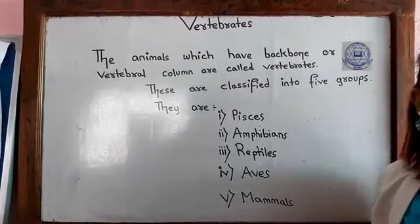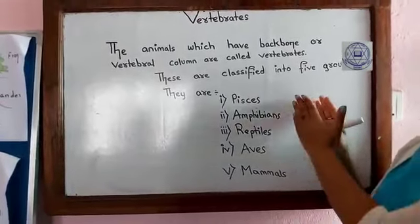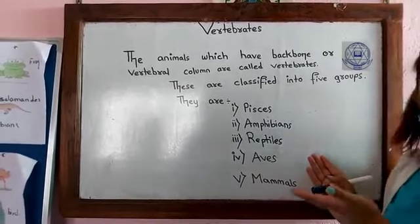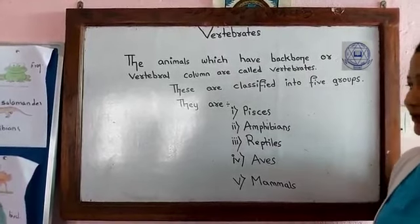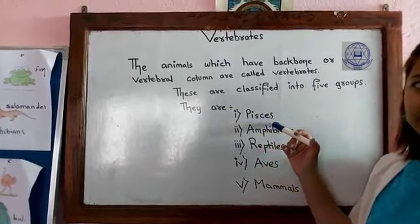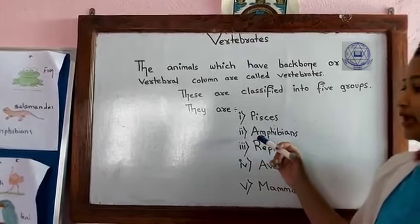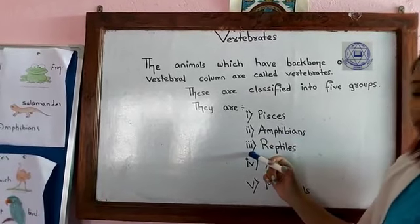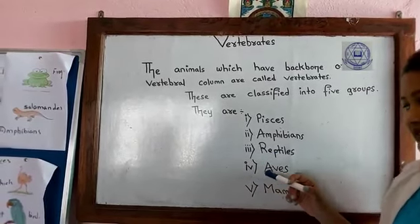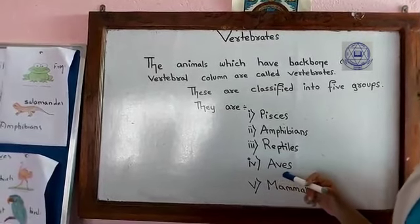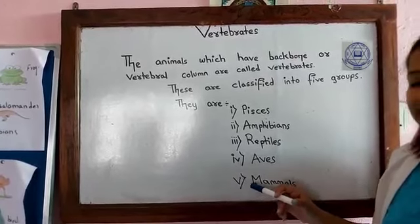Before going to the characteristics, let me tell you one more time how each class is pronounced so you are not confused. The first is Pisces, the second is Amphibians, the third is Reptiles, the fourth is Aves, and the fifth is Mammals.